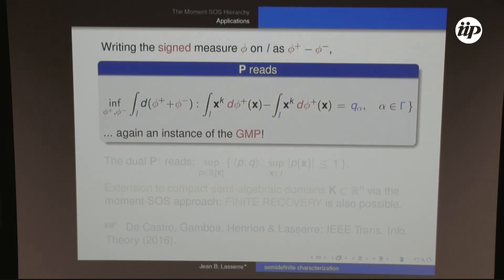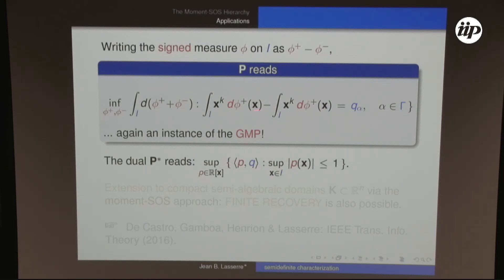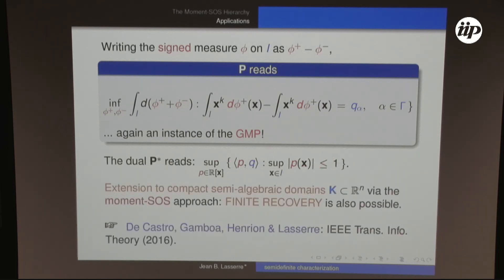To write this as an SDP, write the signed measure as a difference of two positive measures φ+ and φ−. The moment constraints become linear in these, the total variation equals ∫dφ+ + ∫dφ− (since they have disjoint support at the optimum). This is just a GMP. The dual reads: find a polynomial p such that p is between -1 and 1, maximizing the inner product with the moment sequence. Extension to compact semi-algebraic domains is possible, and finite recovery holds in the more general algebraic setting.